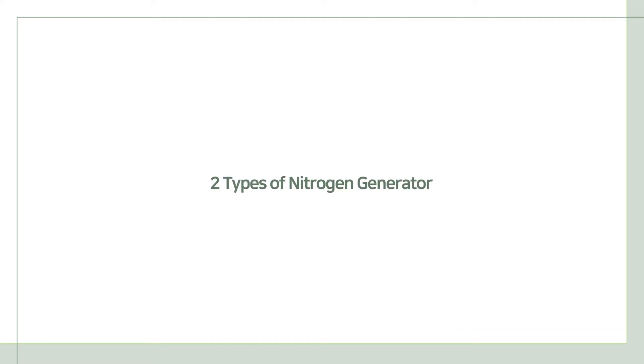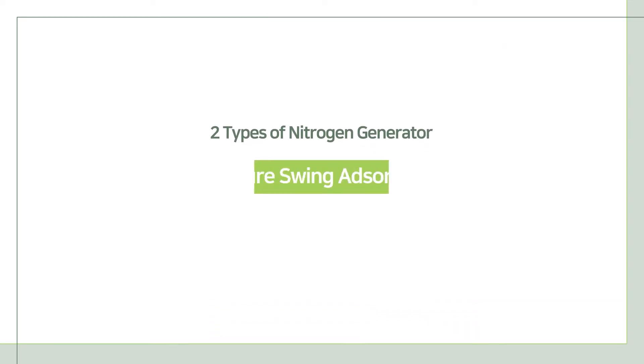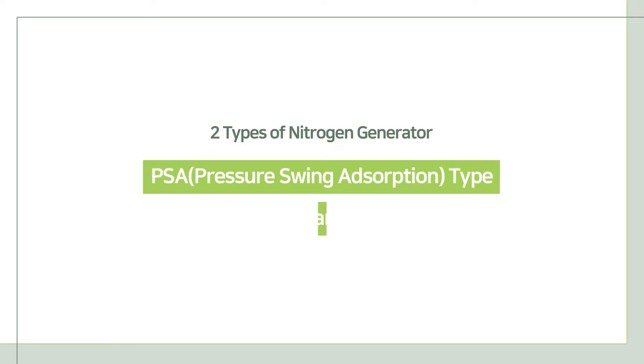There are two types of nitrogen generator based on how they generate nitrogen: pressure swing absorption type and membrane type.